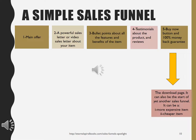Now let's look at a simple sales funnel. You've got your main offer, which is going to be presented with a powerful sales letter or sales letter video about your item. You will have bullet points covering features and benefits of the product, testimonials, reviews, a buy-now button, and a 100% money-back guarantee. All of these elements build trust and convince the person to go all the way down to the end of the funnel.